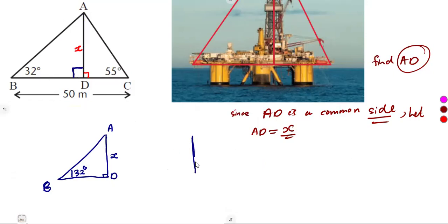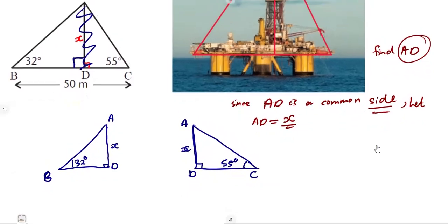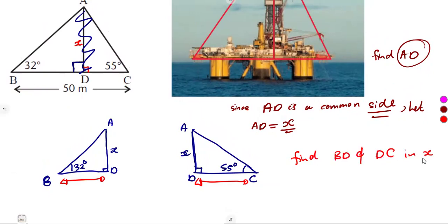We separate the figure like this: we have AD = x, and there is a 55-degree angle at C. With x that we do not know, let us find BD in terms of x and also DC in terms of x. BD and DC together form BC, so we can form an equation in x and solve it. So we are going to find BD and DC in terms of x.